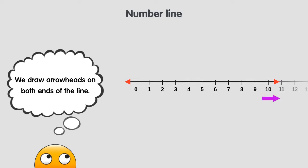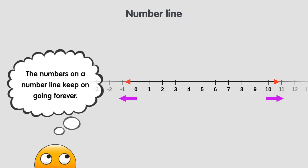From left to right, and from right to left. That means the numbers on a number line keep on going forever, even though we could never write them all down.